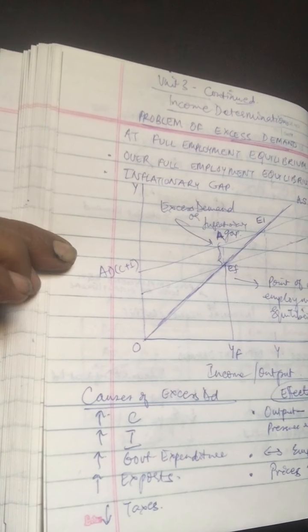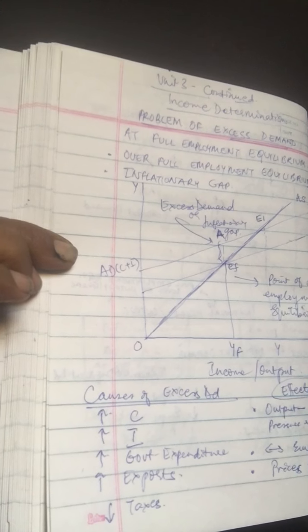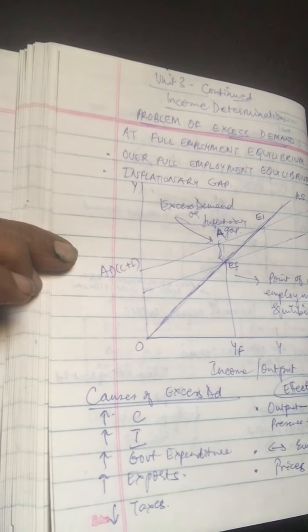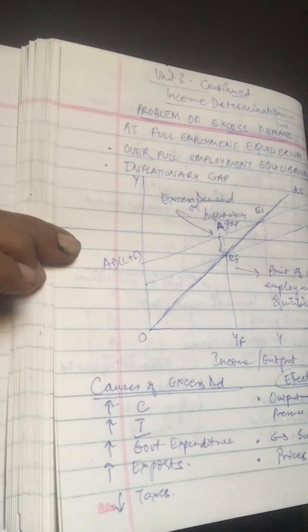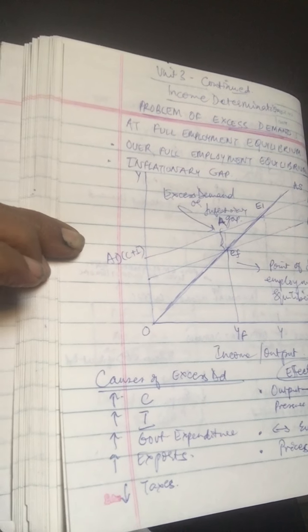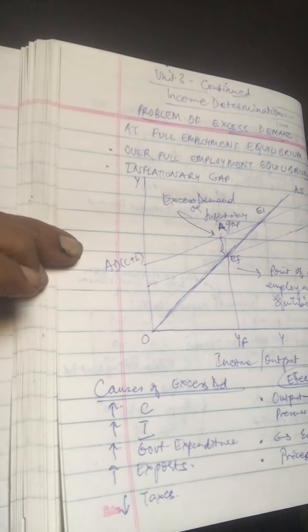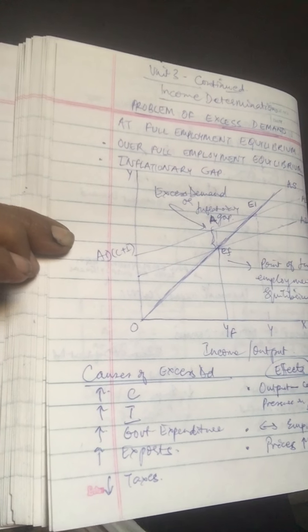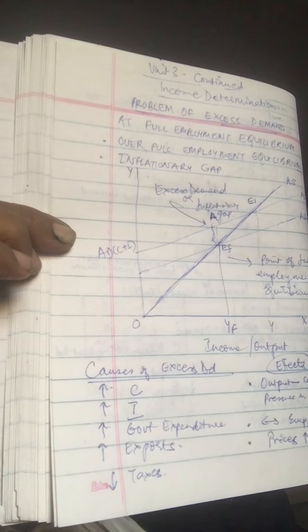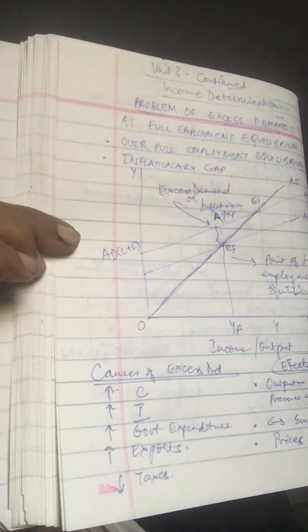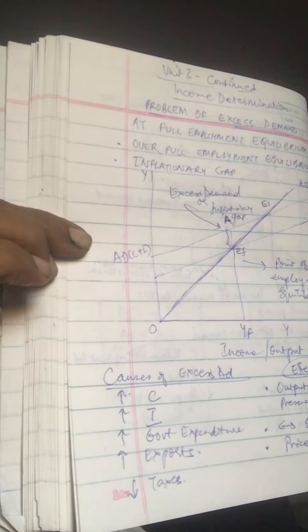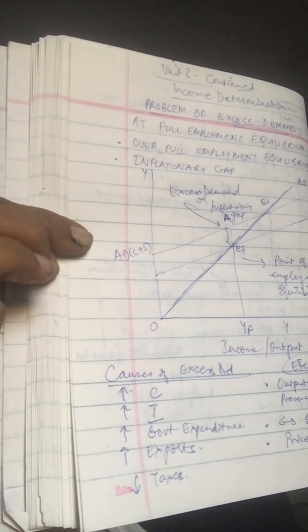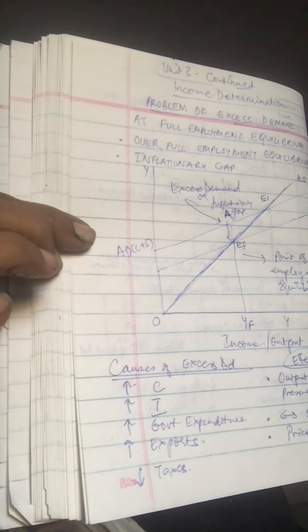Regarding the effects of excess demand: the effect on output — in a situation of excess demand, output of goods and services remains constant; excess demand only puts excess pressure on existing supply. On employment — since the economy is already operating at full employment level, there is no possibility of increasing employment. On prices — because supply is fixed, aggregate supply falls short of aggregate demand, and prices of goods and services start rising, making it an inflationary situation.